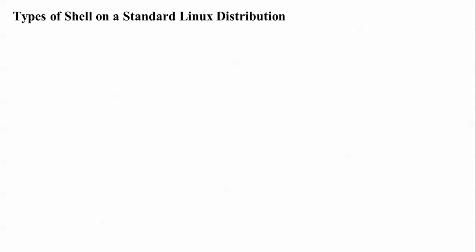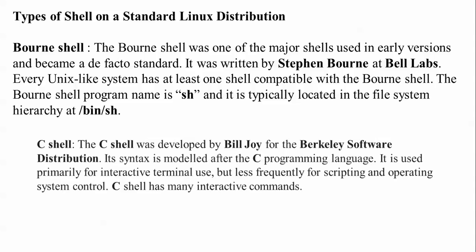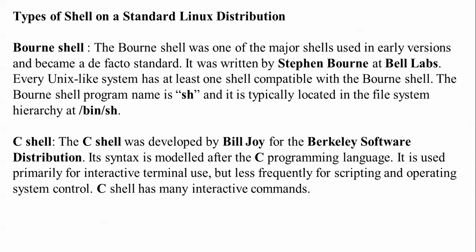Now we have the types of shells in standard Linux distributions. There is the Bourne shell, which is a program called the Bourne shell. Then we have the C shell, which is called C shell. This was developed and written by Stephen Bourne at Bell Labs, and the C shell was part of the Berkeley software distribution. The C shell has many attractive features.